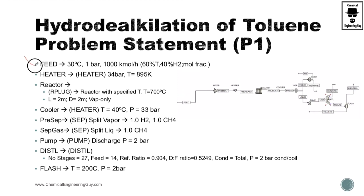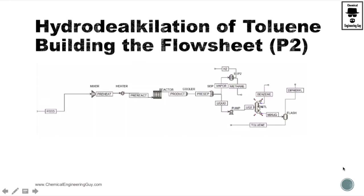These are the conditions we're going to cover when we go to the flow sheet. We need to have first-estimate specifications — for distillation, there are a lot of stages with a reflux ratio that is not that high, so that can be an area of improvement. Now let's go to Aspen and start building our flow sheet.